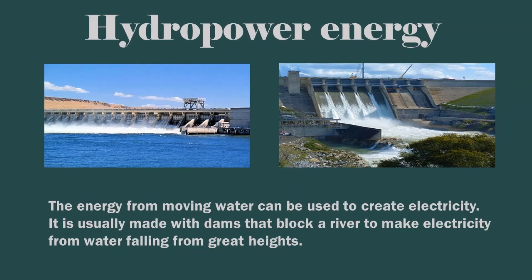Hydro Power Energy — the energy from moving water can be used to create electricity. It is usually made with dams that block a river to make electricity from water falling from a great height.